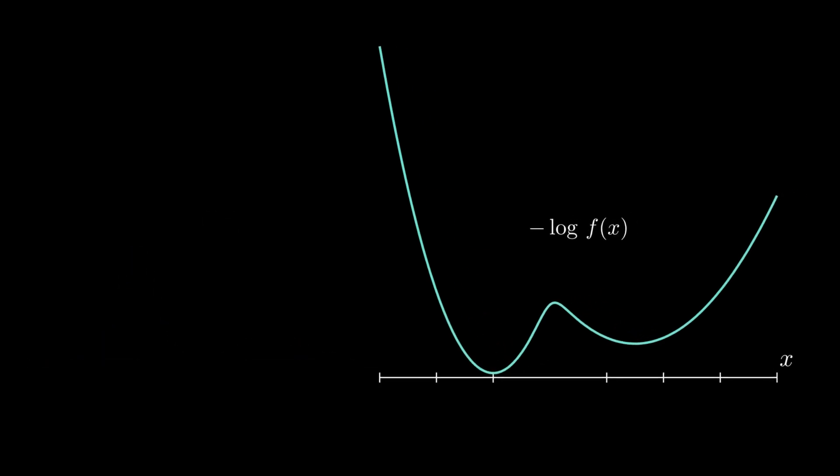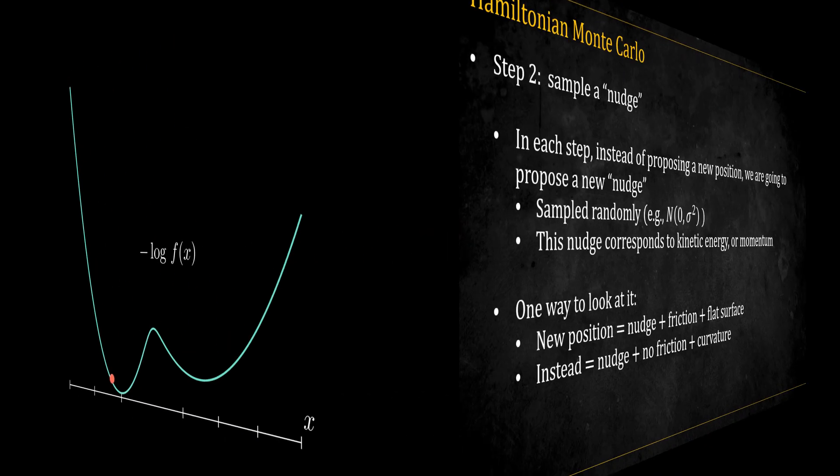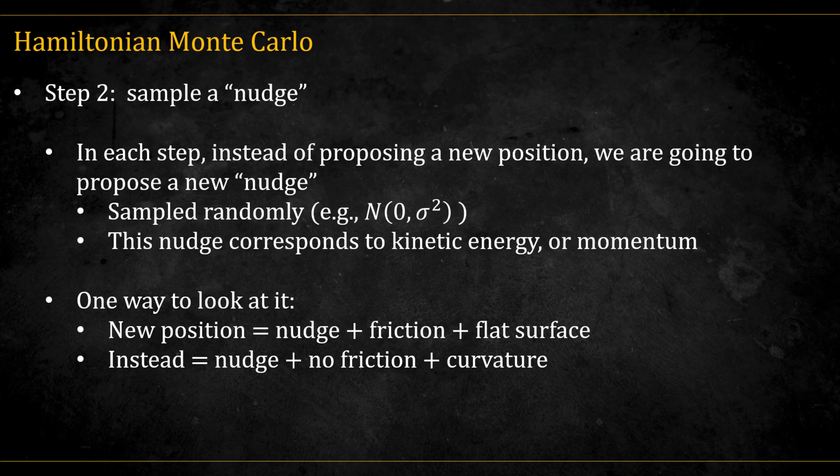Next, we place a ball at some point on this surface. If we release it, and assuming there is no friction, this is the path the ball would take as it moves through the system.